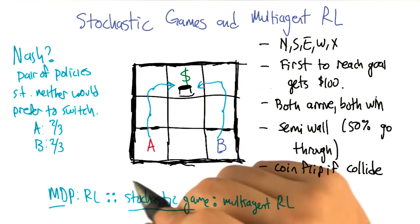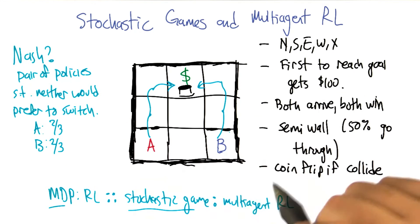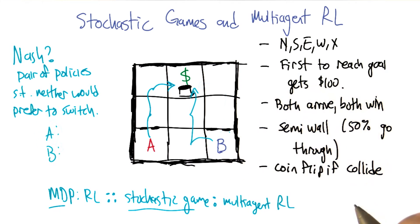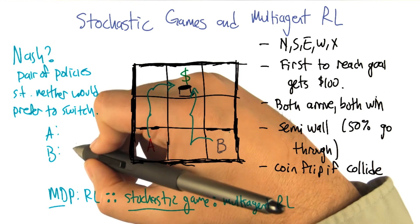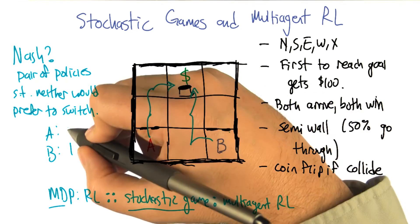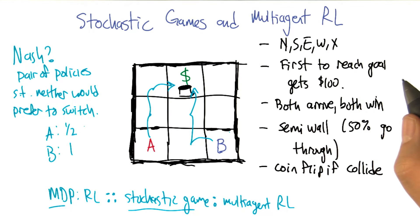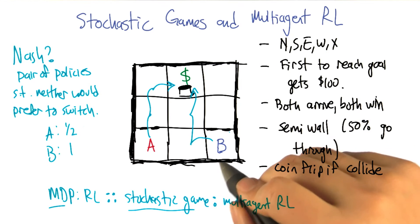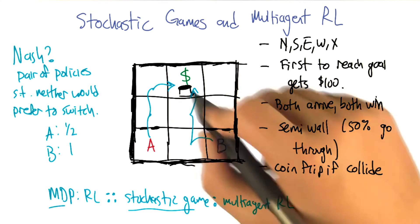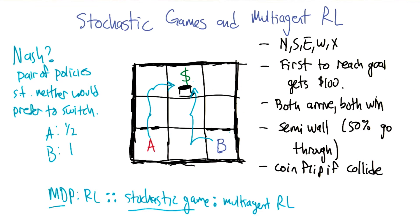So, all right, so if that's the case, if I say, okay A, that's what you should do, B, that's what you should do, then is there a way that either A or B can switch strategies and do better? Well, if B, for example, decides to go west and then go up, what happens? Yes, that's a good question. B will now make it to the goal 100% of the time, and A will only make it to the goal 50% of the time. So B has an incentive to switch to that strategy if we tell them to both go through the semi wall. Right. So that wasn't a Nash equilibrium. B would want to switch this new policy.